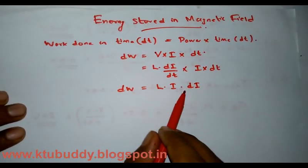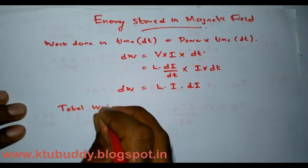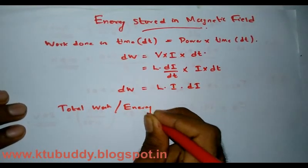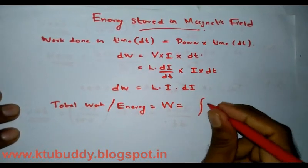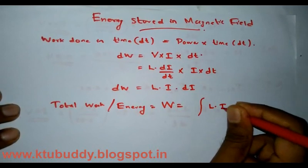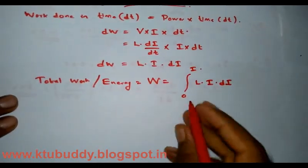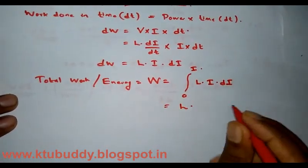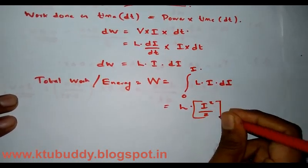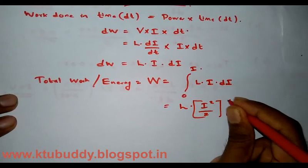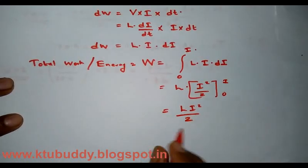Therefore we can represent the total work or energy stored in a magnetic field as W equal to the integral of L·i·di within limits 0 to i. Since L is a constant, we take it outside the integral, and the integral of i gives i²/2, evaluated between limits 0 to i.